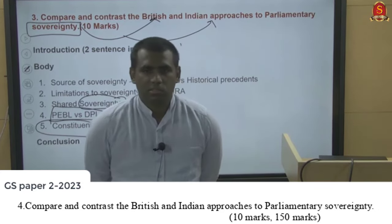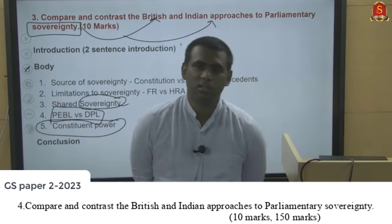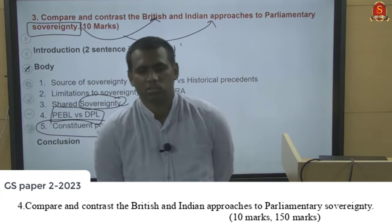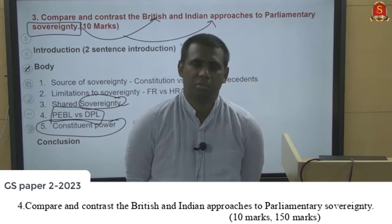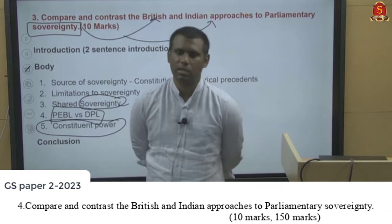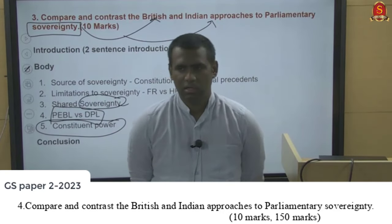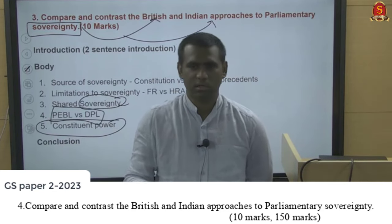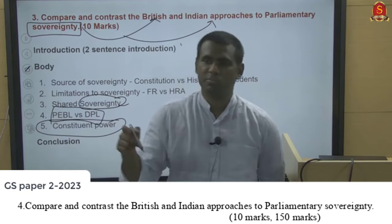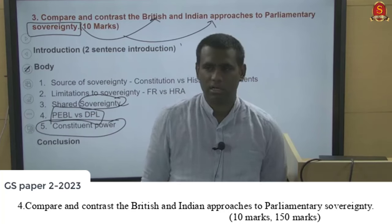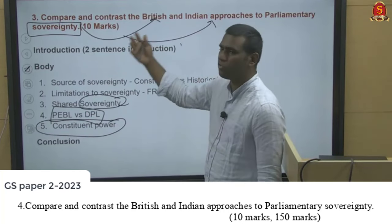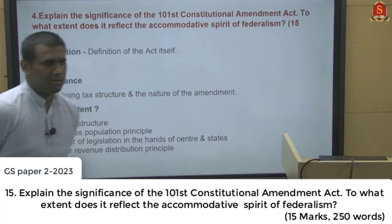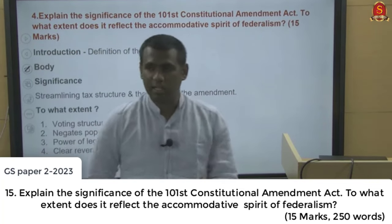Regarding constituent power: since Britain has no single written constitution, Parliament can make any new laws that effectively become the constitutional setup. Indian Parliament's power to amend the constitution is strictly circumscribed by Article 368, basic structure doctrine, and Article 13. These differences collectively show how parliamentary sovereignty differs significantly between the two systems.